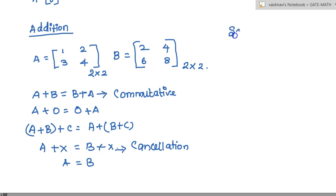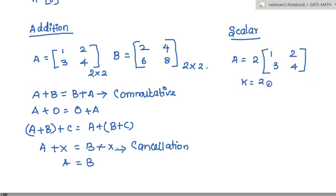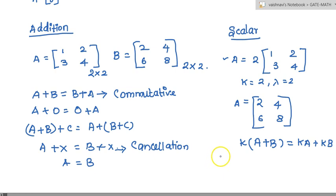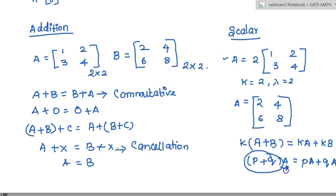Next is scalar multiplication — when you multiply a matrix with a scalar. Consider matrix A; when you multiply it with a scalar, say 2 (scalars can be represented as K, lambda, or anything else), the result multiplies every element. For example, if A has elements 1, 2, 3, 4, then 2A is equal to 2, 4, 6, 8. For the properties of scalar multiplication: consider K as a scalar. If P plus Q is a scalar and you multiply it with matrix A, that is equal to separating it and multiplying each along with the A matrix.